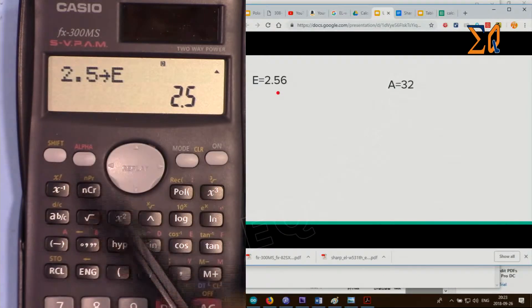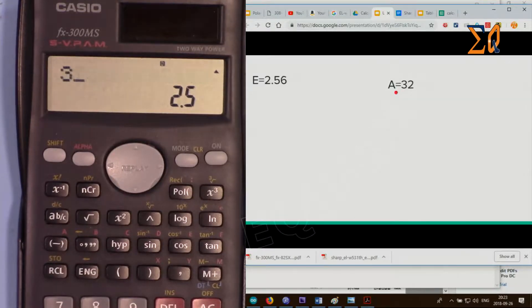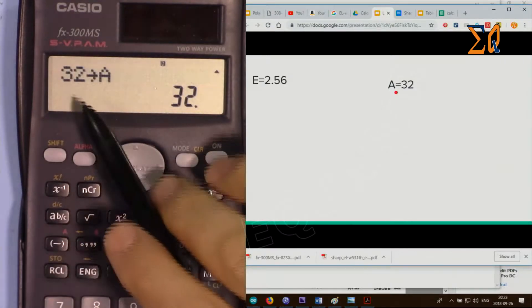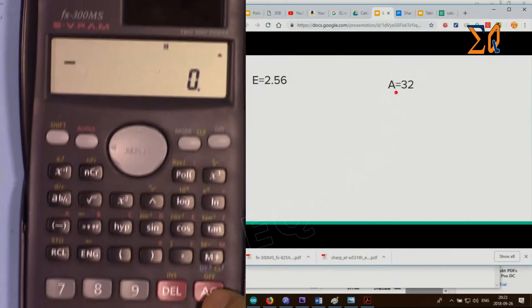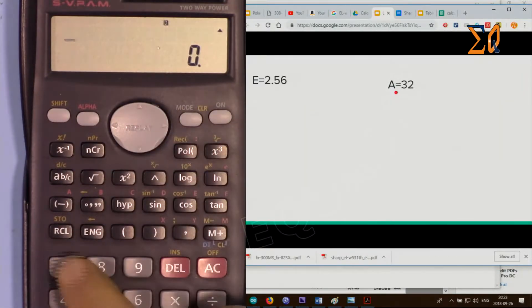Now let's store 32 in A. Enter 32, then second function store and then A. Now the value is in A. I'm pressing all clear here.